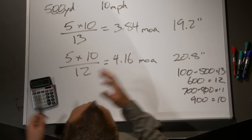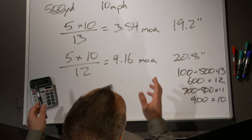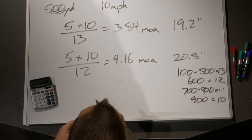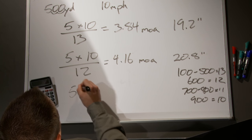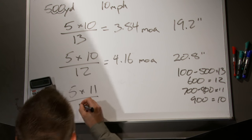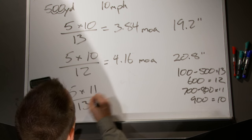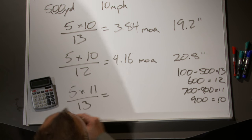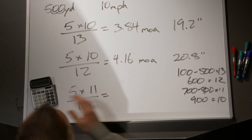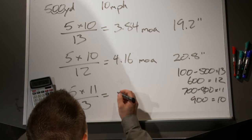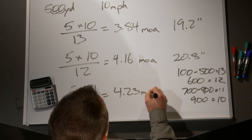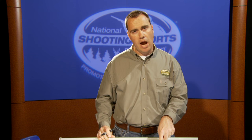If I don't get the wind reading right, that's actually going to be more of a problem than using a different constant. For example, if it actually was 11 miles an hour and I guessed it was 10, it's going to be pretty hard to see the difference between 10 and 11 mph downrange. So: 5 times the actual 11 is 55, divided by the correct constant of 13, gives me an answer of 4.23 minutes of angle.